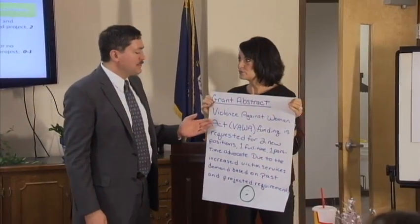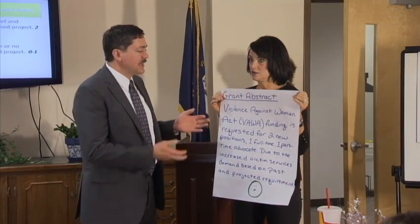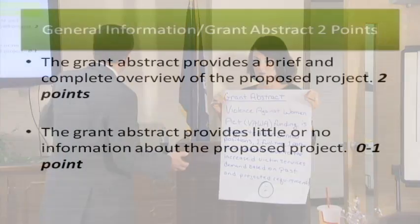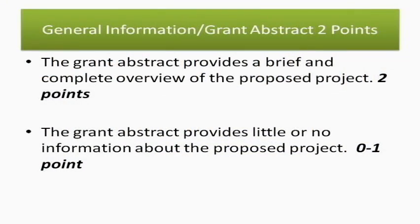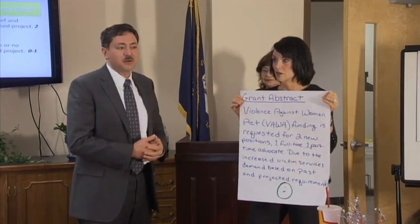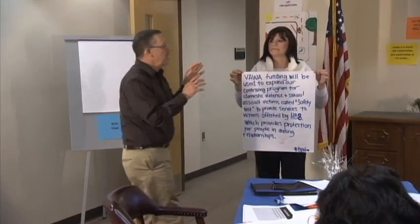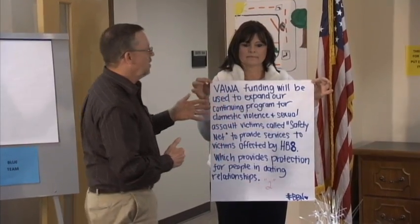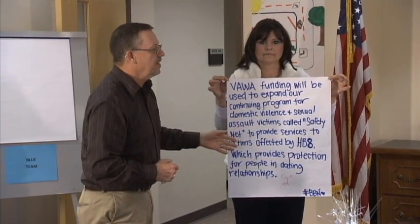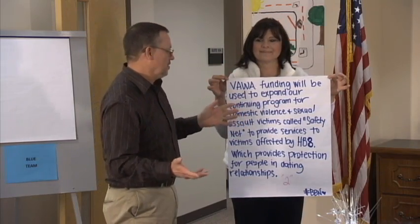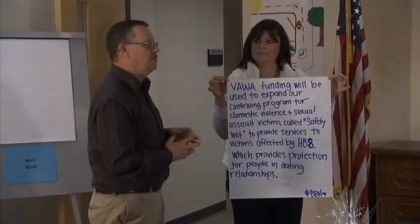So the grant abstract — when we read it, it doesn't actually tell us what the project is. One of the scoring criteria says: give us a brief and complete overview of the proposed project. Right now it just says we're hiring people. So as such, we're giving them a zero. Well, based on the criteria, this is one that's either all or nothing. We really believe that if you said anything on this piece of paper providing a complete overview of the proposed project, they ought to get the number. So we gave them a two.